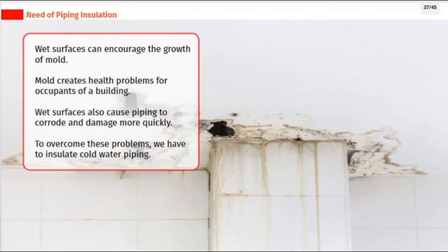Wet surfaces can encourage the growth of mold, which creates health problems for occupants of a building. Wet surfaces also cause piping to corrode and damage more quickly. To overcome these problems, we have to insulate cold water piping.